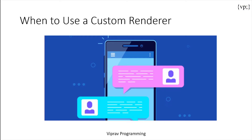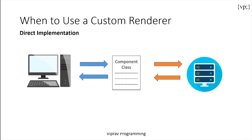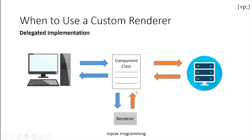JSF supports two programming models for encoding and decoding. First, there's direct implementation, where the component class itself implements the decoding and encoding. There's also delegated implementation, which is a separate renderer that takes care of decoding and encoding, allowing one component to have multiple renderers. You can use both implementations if you're not sure whether multiple renderers will be used in the future, and make delegated implementation the default.